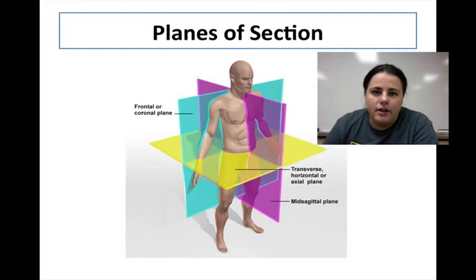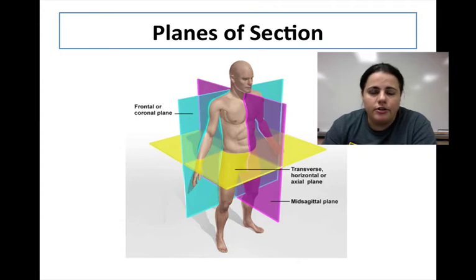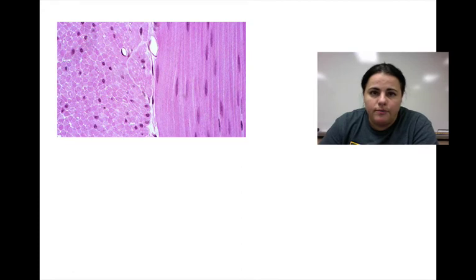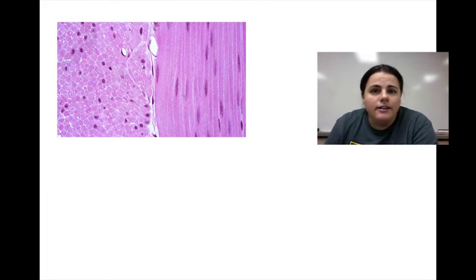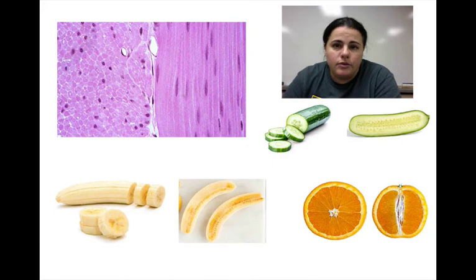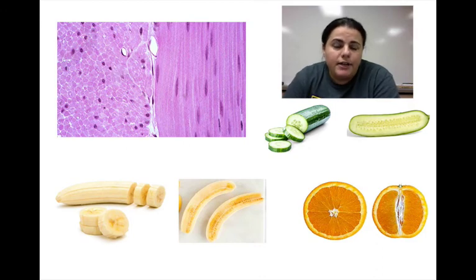The last thing to cover are planes of section — ways that the body can be sliced or cut. There are three major types: the frontal section shown in blue, the sagittal section shown in pink, and the transverse section shown in yellow. It's important to understand that tissues or any anatomical part can look very different depending on how they're cut. Like a cucumber or banana cut differently will look different, but it's still the same cucumber. A tissue is the same part whether cut in one direction or another.